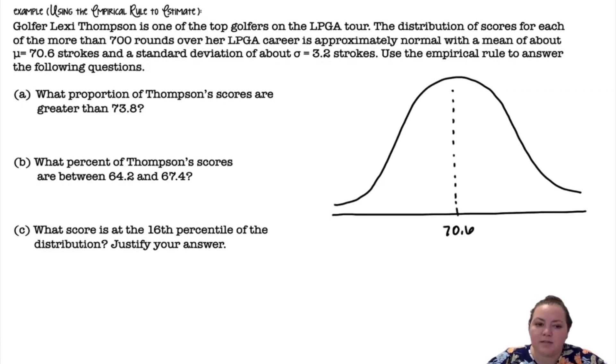So I'm going to start by drawing this normal distribution. So 70.6 is the mean. As I move to the right, I'm adding a standard deviation of 3.2 each time. As I move to the left, I'm subtracting a standard deviation of 3.2 each time. So I went ahead and drew that normal distribution. Now I'm going to use that to answer these questions.